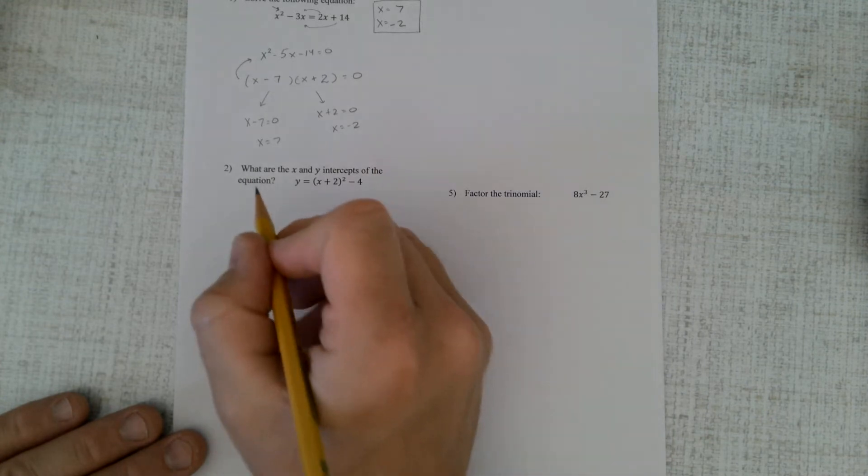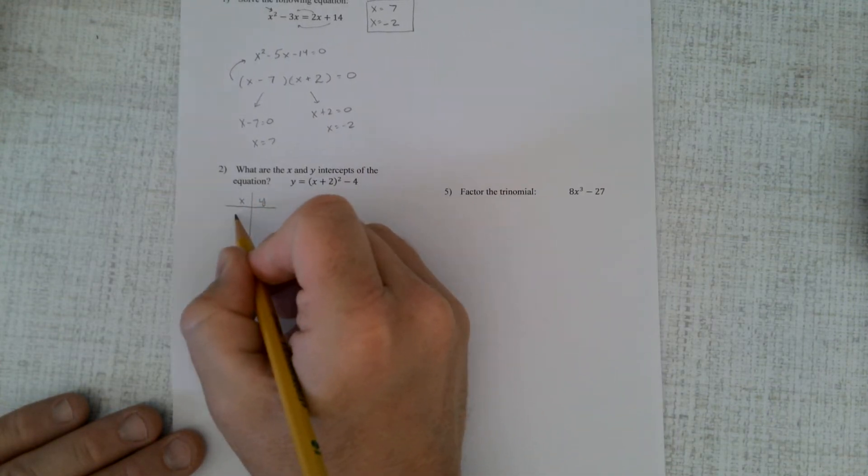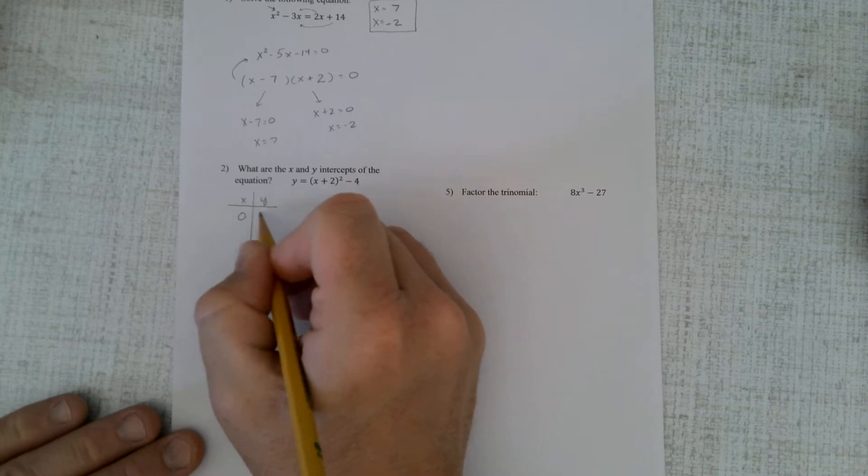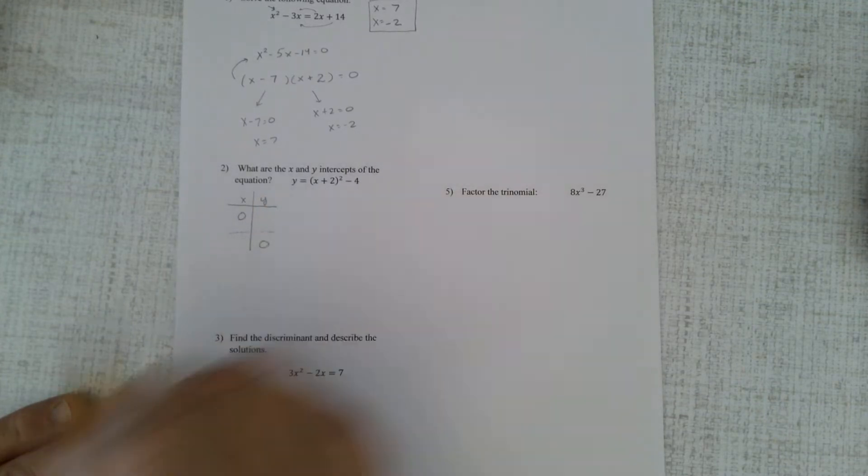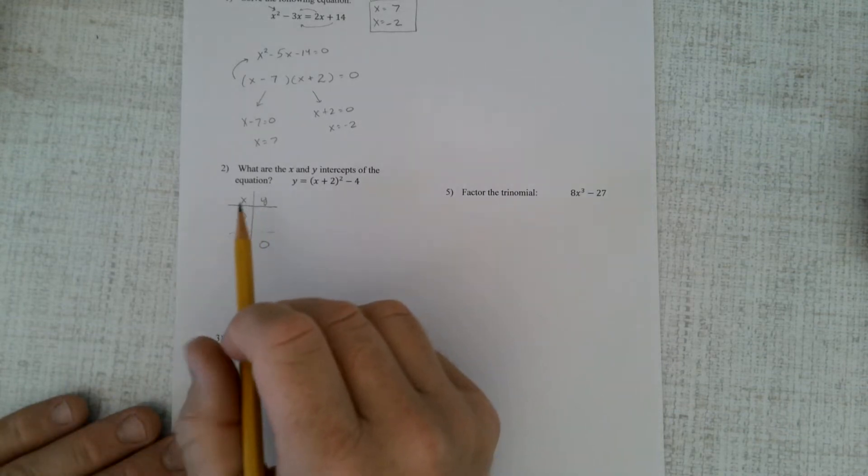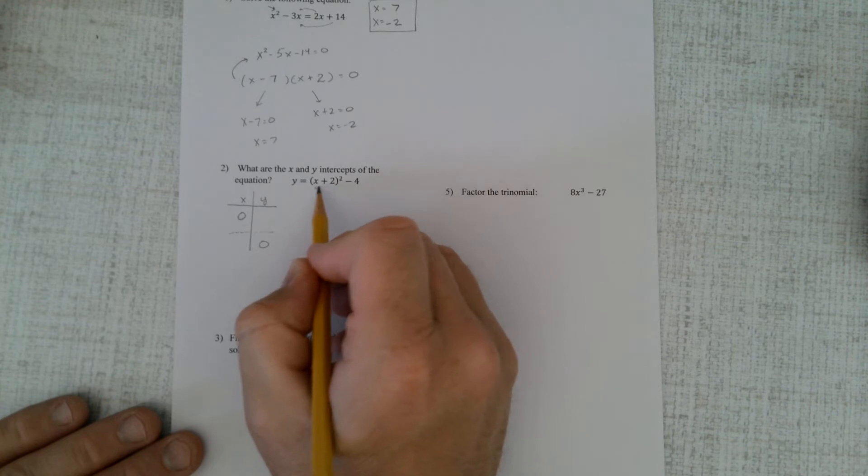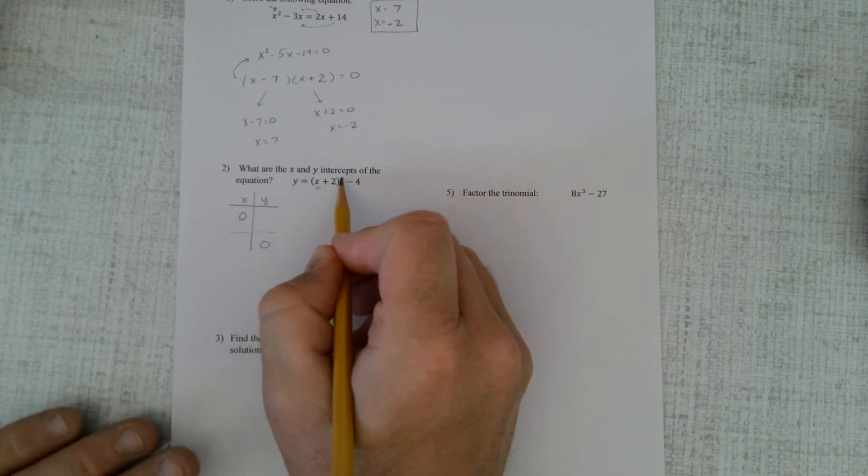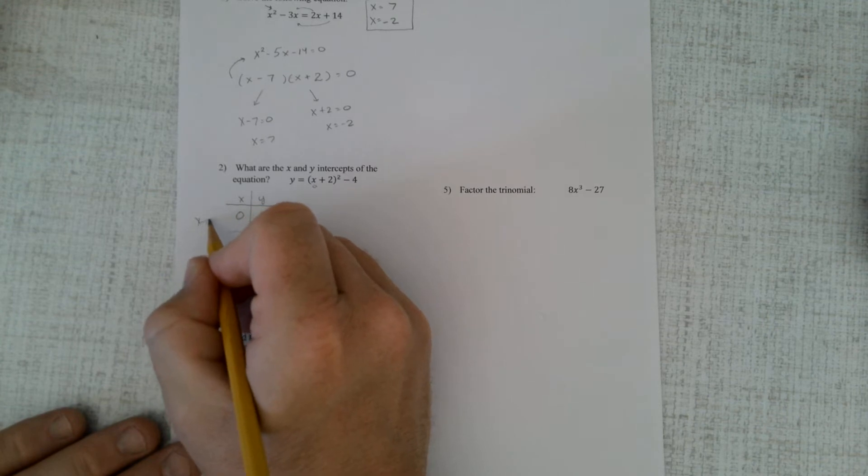Number two, what are the x and y intercepts? Well, I always like to set up my chart with the x and the y, and this is what my x intercept looks like, and this is what my y intercept looks like. What is y when x is 0, and what is x when y is 0? This one's easiest to find right here. I'll just plug in 0, and that'd be 0, and that'd be 2² which would be 4. 4 - 4 would be 0. So right there we have it. That is an x intercept.